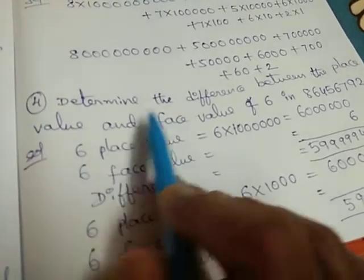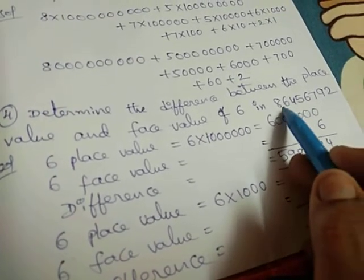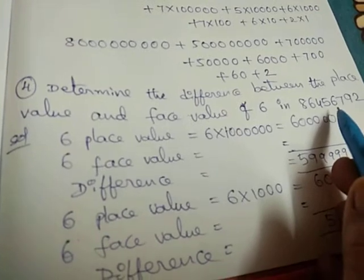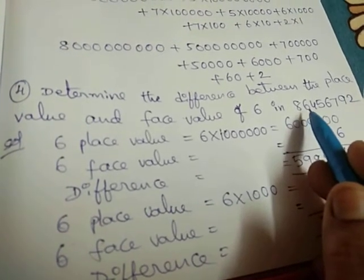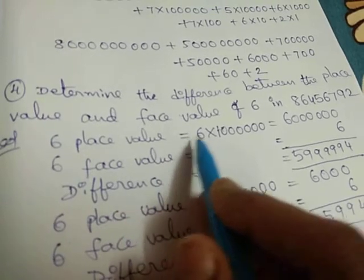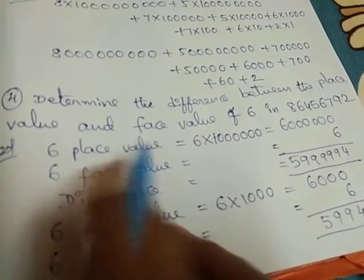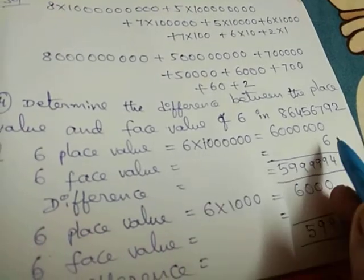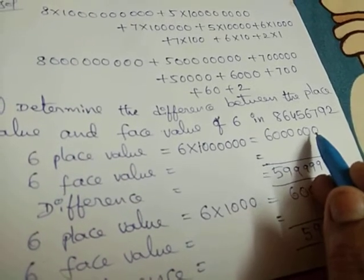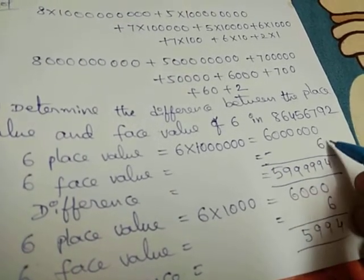Fourth sum: determine the difference between the place value and face value of 6 in the given number. There are two 6's, so find the difference for both. The first 6 is in the ten lakhs position, so its place value is 6 × 10 lakhs = 60 lakhs. Face value is always the digit itself, so face value is 6. Difference = 60,00,000 − 6.